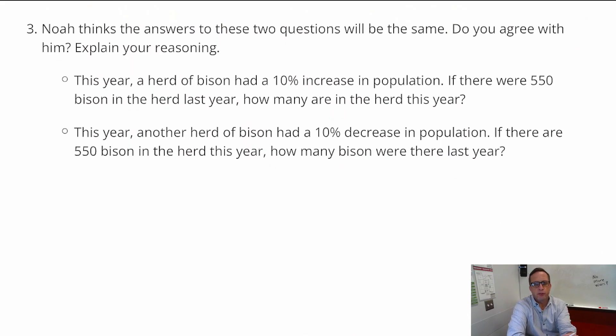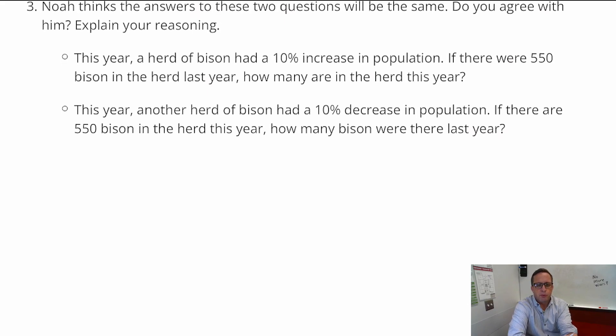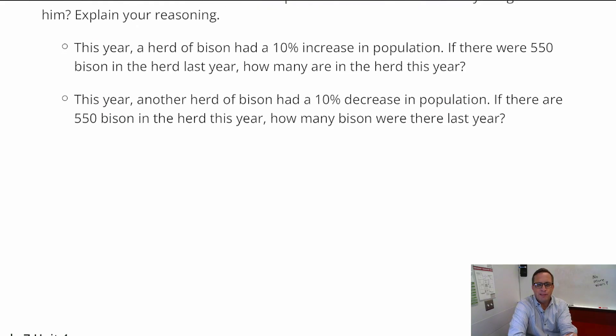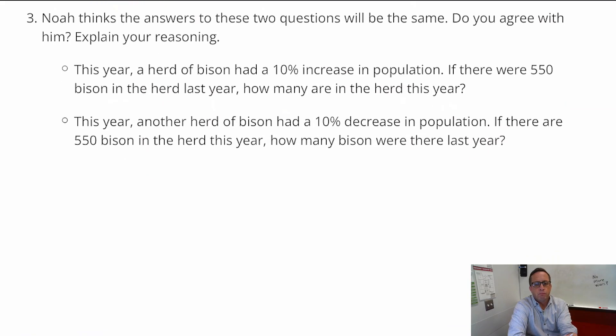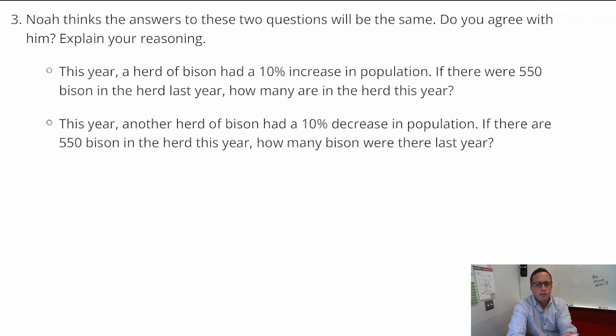Number 3, Noah thinks the answers to these two questions will be the same. Do you agree with him? Explain your reasoning. So this year, the first one says this year, a herd of bison had a 10% increase in population. If there were 550 bison in the herd last year, how many are in the herd this year? This year, another herd of bison had a 10% decrease in population. If there are 550 bison in the herd this year, how many bison were there last year?